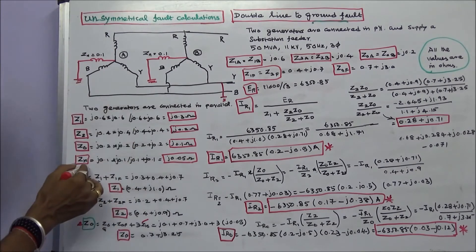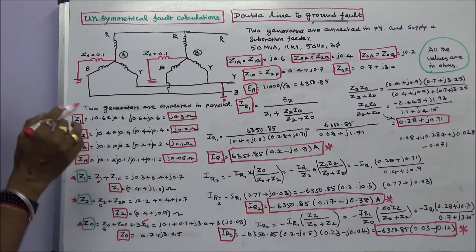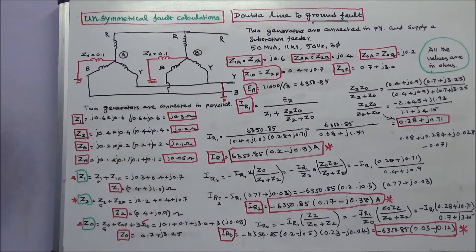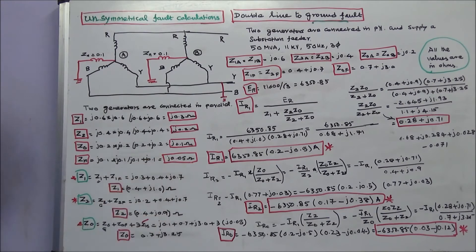The actual positive sequence, negative sequence, and zero sequence impedances are found by adding generator and feeder impedances. Z1 equals Z1G plus Z1F, giving Z1 equal to 0.4 plus J0.1 ohms. Z2 equals the negative sequence impedance of the generator plus that of the feeder, giving 0.4 plus J0.1 ohms. Zero sequence impedance equals the generator zero sequence plus feeder zero sequence plus 3 times Zn, where Zn equals J0.05. Substituting all values, Z0 equals 0.7 plus J0.325 ohms.